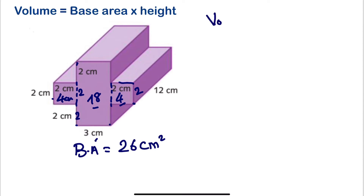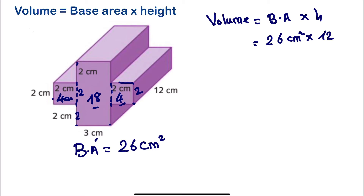Now we can calculate the volume. Volume equals base area times the height. We have the base area of 26 cm² times the height of 12 cm. Multiplying 26 times 12 gives us 312, so the volume is 312 cm³. Next, let us calculate the surface area.